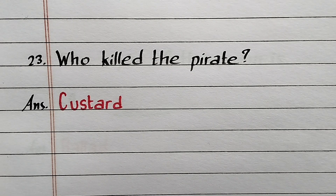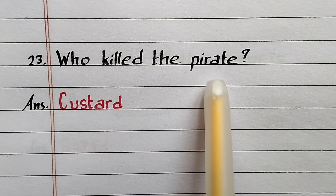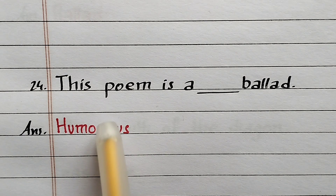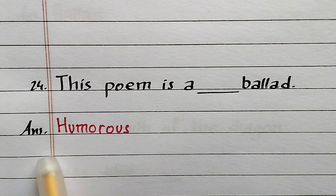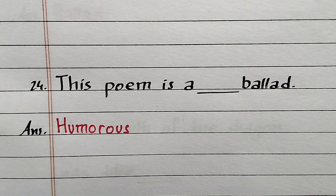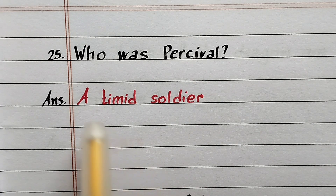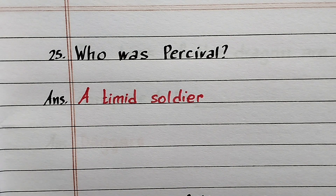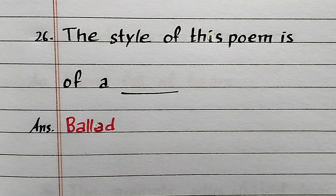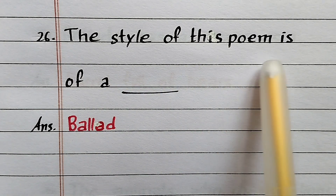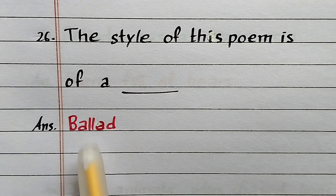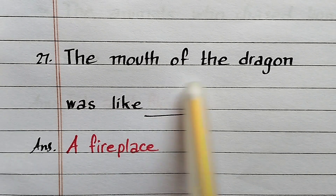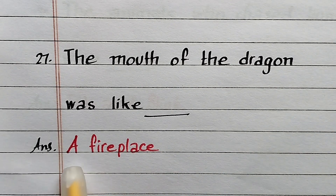Question number 23: Who killed the pirate? Answer: Custard. Question number 24: This poem is a ___ ballad? Answer: Humorous. Question number 25: Who was Percival? Answer: A timid soldier. Question number 26: The style of this poem is of a ___? Answer: Ballad. Question number 27: The mouth of the dragon was like ___? Answer: A fireplace.